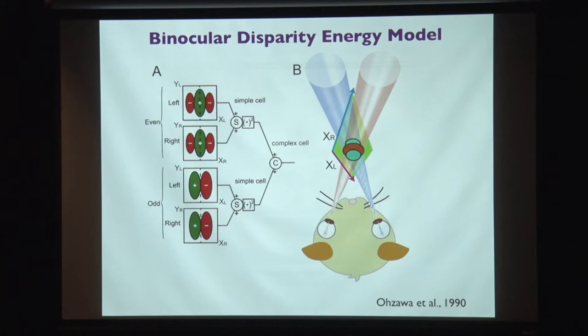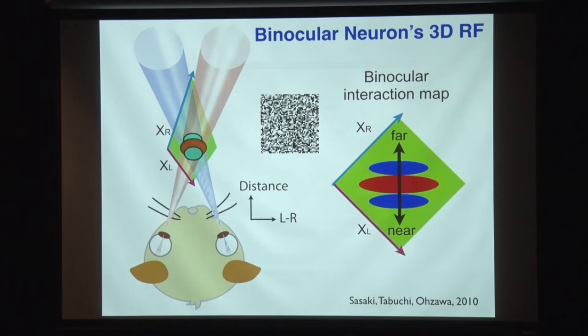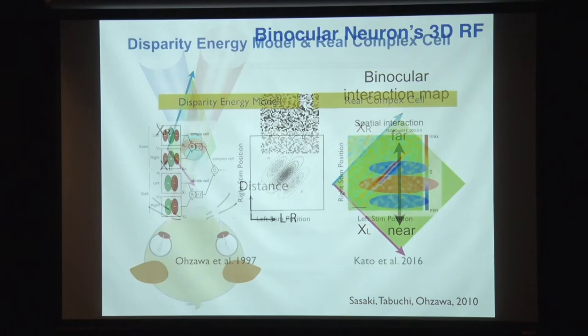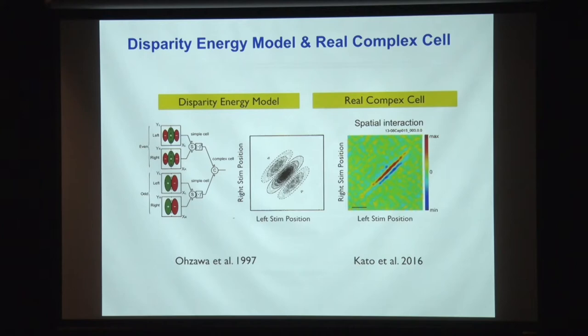We can measure this three-dimensional receptive field and take a horizontal cross-section through it using stimuli. This uses left-right stimuli that are completely uncorrelated — independent random dots generated frame by frame. We can extract this kind of receptive field structure. But we encountered a discrepancy between the prediction of the disparity energy model and what actual neurons do.